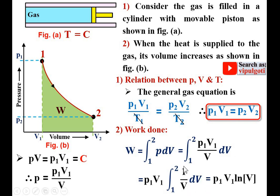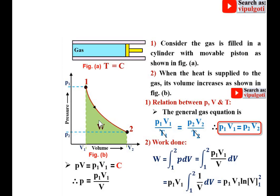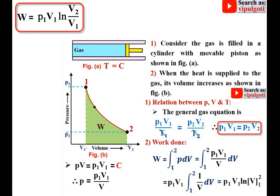The integration of 1/V is ln V, evaluated from limit 1 to 2. So W = P1V1 [ln V2 − ln V1] = P1V1 ln(V2/V1). This is a very important relation to remember: the work done during the isothermal process is W = P1V1 ln(V2/V1).